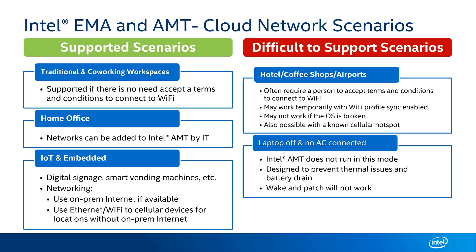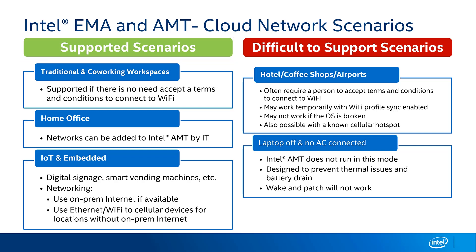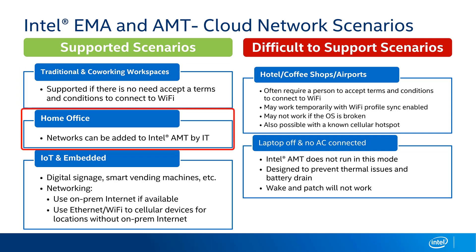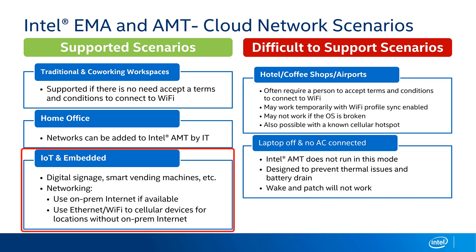Building on Intel EMA and AMT in the cloud, let's talk about network scenarios. Supported scenarios include traditional office or co-working spaces where there's no need to accept terms and conditions to connect to Wi-Fi. Home offices are easy too — we can add the wireless network that a home user has to Intel AMT either automatically through profile synchronization or manually by IT. For IoT and embedded usage such as digital signage, smart vending machines, or smart billboards, if on-premises internet is available we recommend using that; otherwise a Wi-Fi to cellular device can bridge the connection back to the internet.